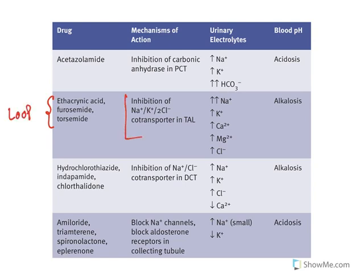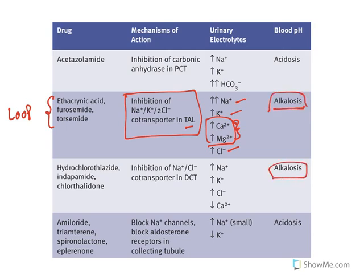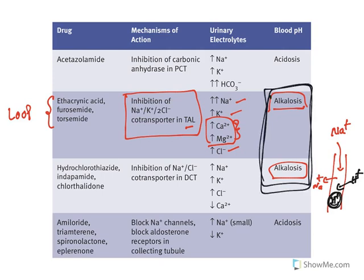Loop diuretics — ethacrynic acid, furosemide, torsemide — inhibit sodium, potassium, and chloride reabsorption at the thick ascending loop of Henle, causing loss of sodium, potassium, and chloride. Positive ions like calcium and magnesium are also lost. These drugs, along with thiazides, cause alkalosis: the high sodium load reaching the collecting duct is reabsorbed in exchange for protons. Proton loss means acid is lost, making blood pH alkaline.